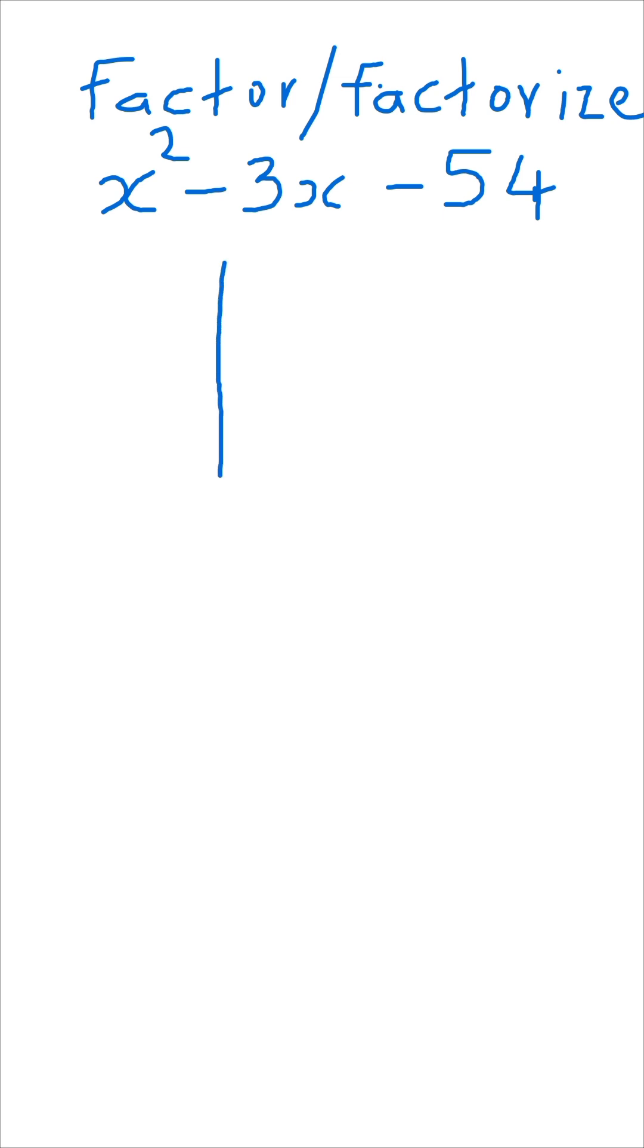In order to do that, we can rule a line and put 54 multiplied by 1 because we are looking for factors of 54. So 54 times 1 is 54, that is the first factors that we have there.